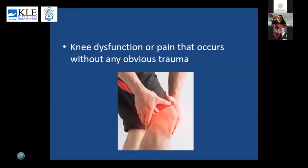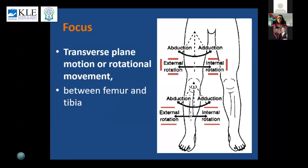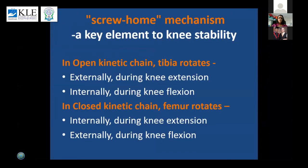We're going to talk about knee dysfunction or pain that occurs without any obvious trauma. We're not talking of patients who are coming from the sports field or have had a fall. Our focus specifically today would be on the transverse or rotational movement that occurs between the femur and tibia. The screw-home mechanism is a very important key element to knee stability. In the open kinetic chain, the tibia rotates externally during knee extension and internally during knee flexion.